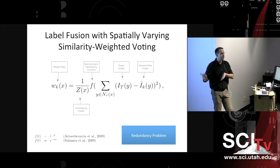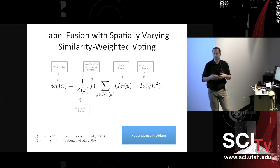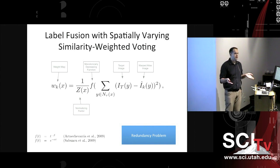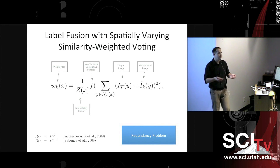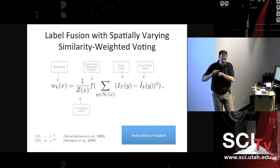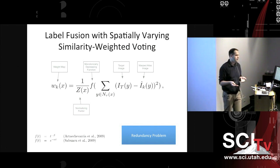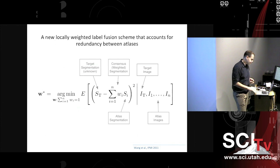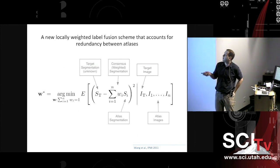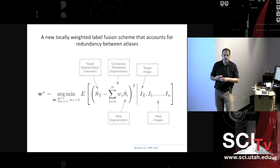Just because something is really prevalent in the population doesn't mean it should be given greater weight during segmentation. In the real world we don't have the same brain replicated 100 times, but we certainly have anatomical patterns that are more prevalent than others. The point is that if we only do single atlas-to-target similarity as our basis for deciding weights, we're never considering possible redundancies among atlases. Hongzhi's paper — an IPMI 2011 paper — came up with a method that essentially accounts for some of this redundancy.